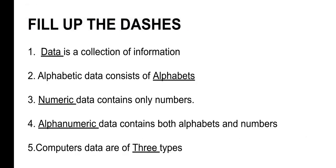Fill in the blanks. First blank: data is a collection of information. If you are writing a story in a computer about yourself — writing your name, school, family — everything you write is data. But if the content has meaning, it becomes information.